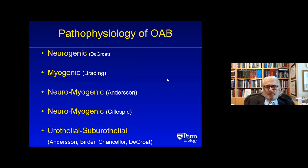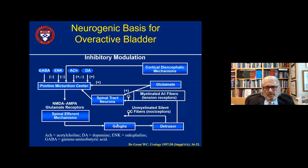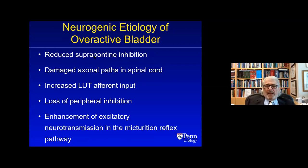There are basically five theories that make sense, some competing. The easiest to understand is Chet de Groot's famous diagram of the neural axis — interruption of the axis at basically any point, suprapontine such as stroke, or axonal paths in the spinal cord — can result in increased lower urinary tract afferent output due to a neurogenic cause or loss of peripheral inhibition. Any of these can result in involuntary bladder contractions. If the patient has sensation — as most MS and Parkinson's patients do — they'll have classical OAB; spinal cord injury patients have involuntary contractions without sensation resulting in leakage.